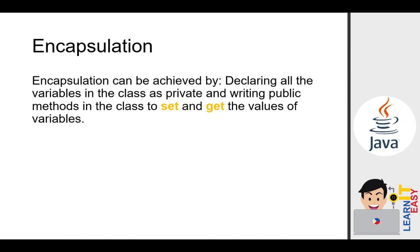Encapsulation can be achieved by declaring all variables in the class as private and writing public methods to set and get the variable values. The two most important things here, aside from the private access modifier, are what we call setters and getters. These setters and getters will be our only means to place values into our private data members.